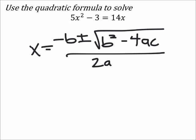We just need to subtract 14x from both sides. So now this becomes - I've got 5x² and this is now -14x.